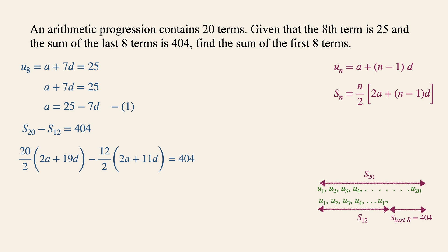Now the next step intuitively is to simplify this equation to give us 10 2A plus 19D minus 6 2A plus 11D equals to 404. We can then simplify it further to give us 20A plus 190D minus 12A minus 66D equals to 404. Now simplifying this equation further we will then have 2A plus 31D equals to 101.